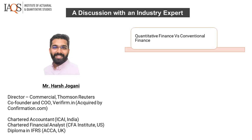I'll go with the first point — what's the difference between conventional finance and quantitative finance. Before we get into quantitative finance, it's important to understand the overall finance industry. I categorize the finance industry into two broad aspects: transactional finance and decision-making finance. Transactional finance predominantly consists of accounting, where one maintains books of accounts of day-to-day activity. Decision-making finance is based on experience and various analyses.